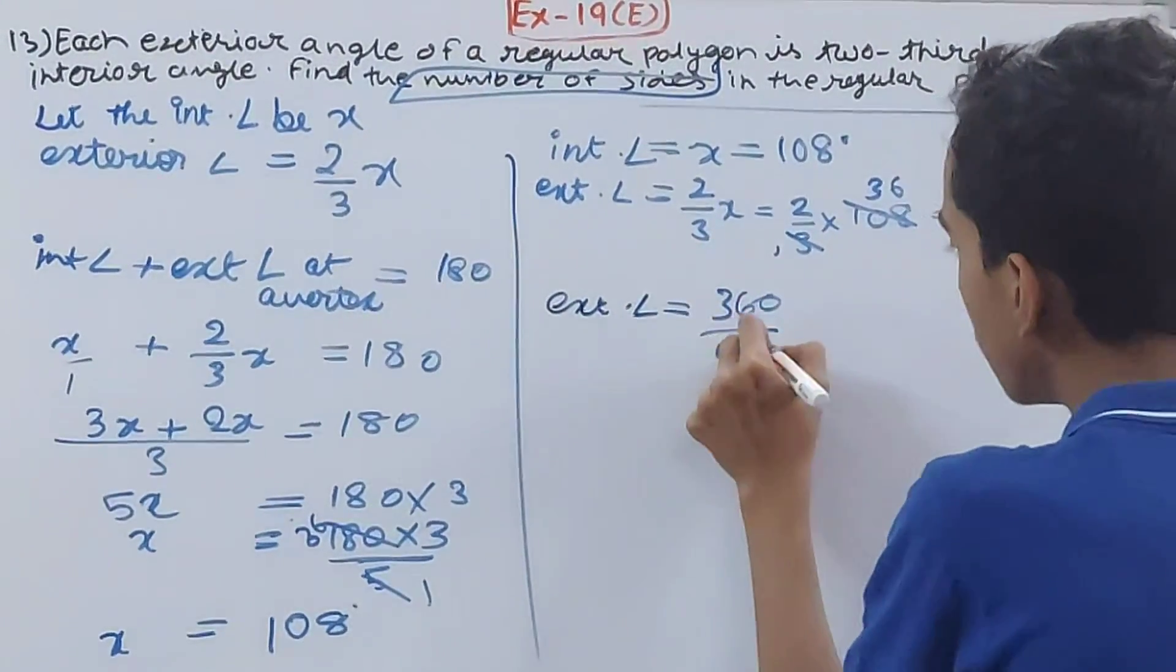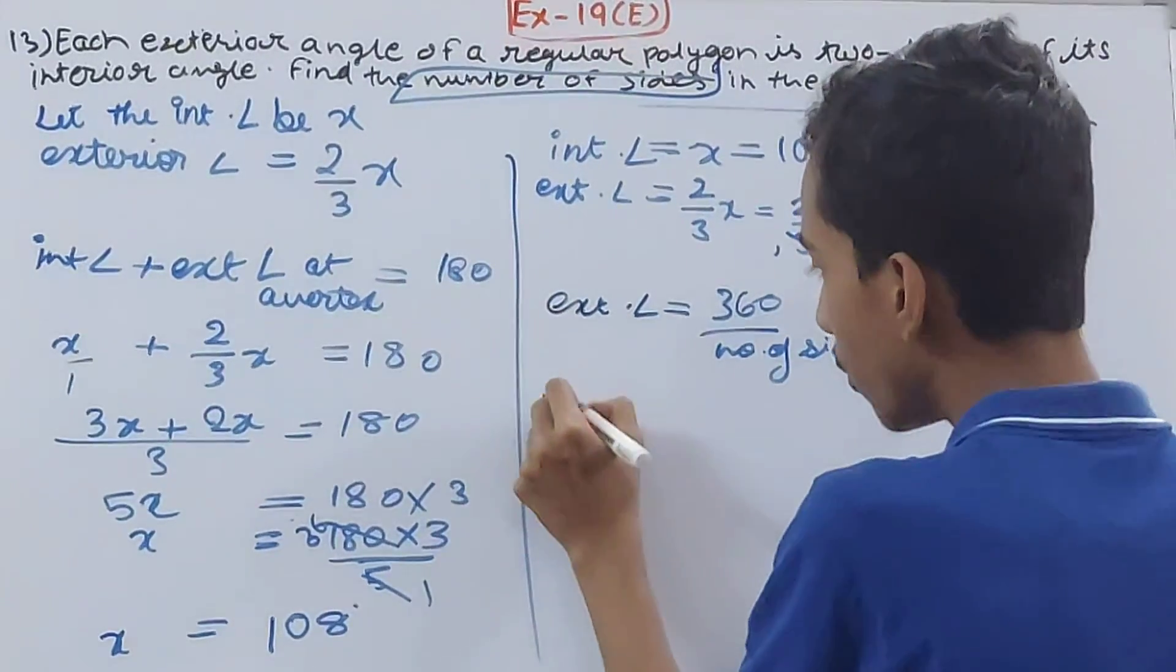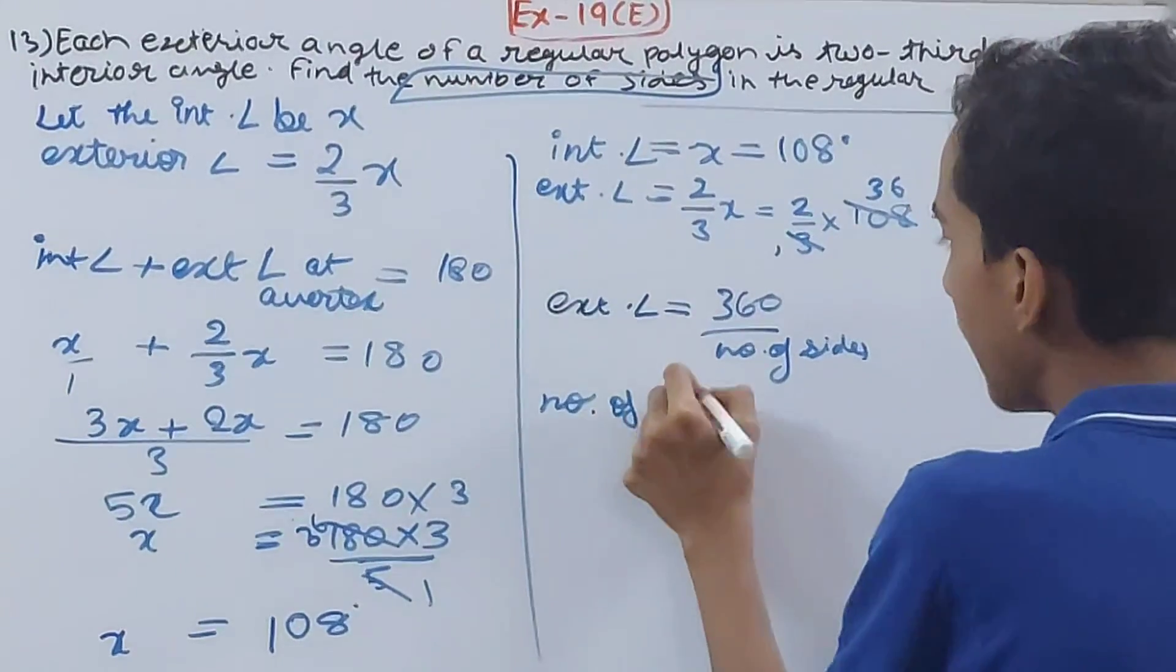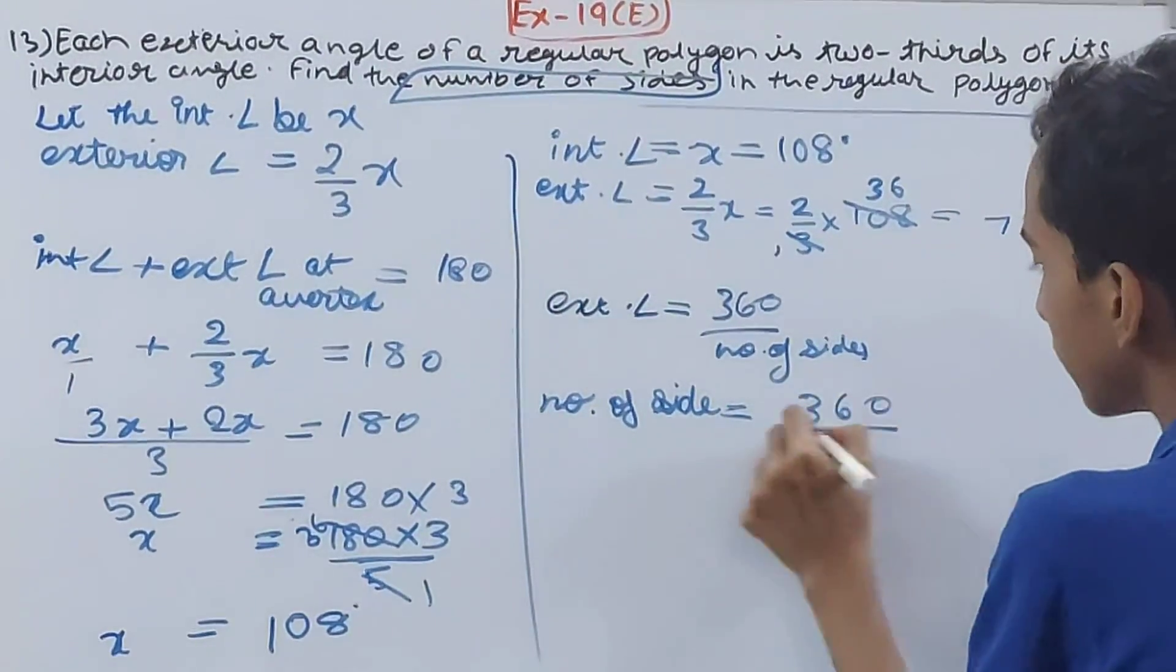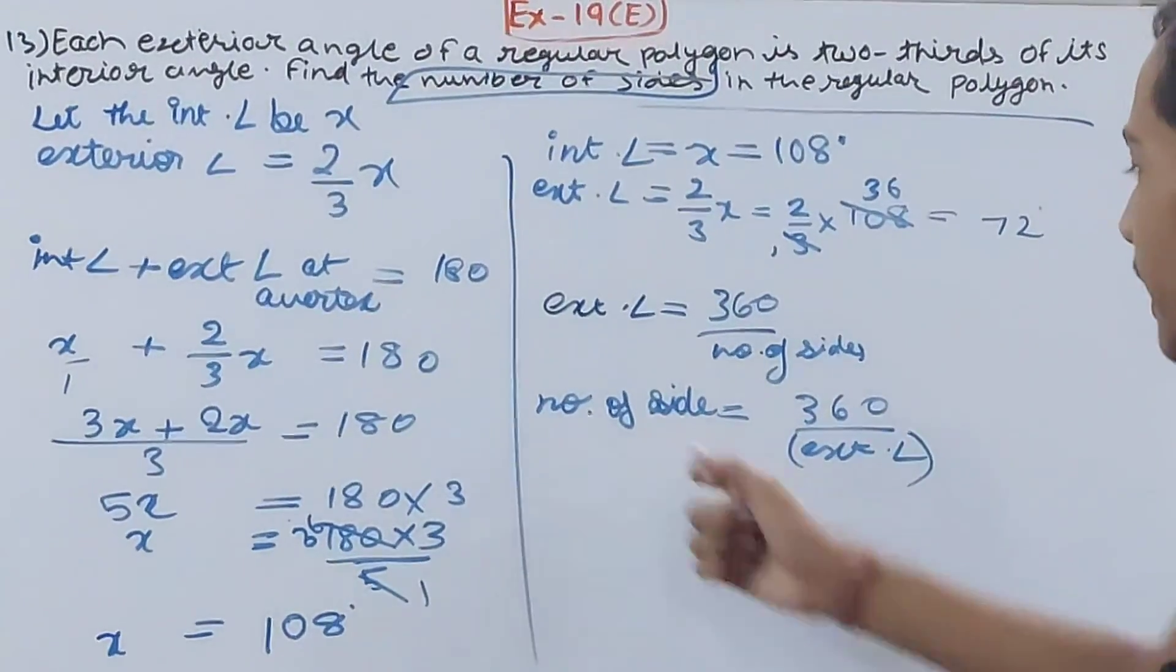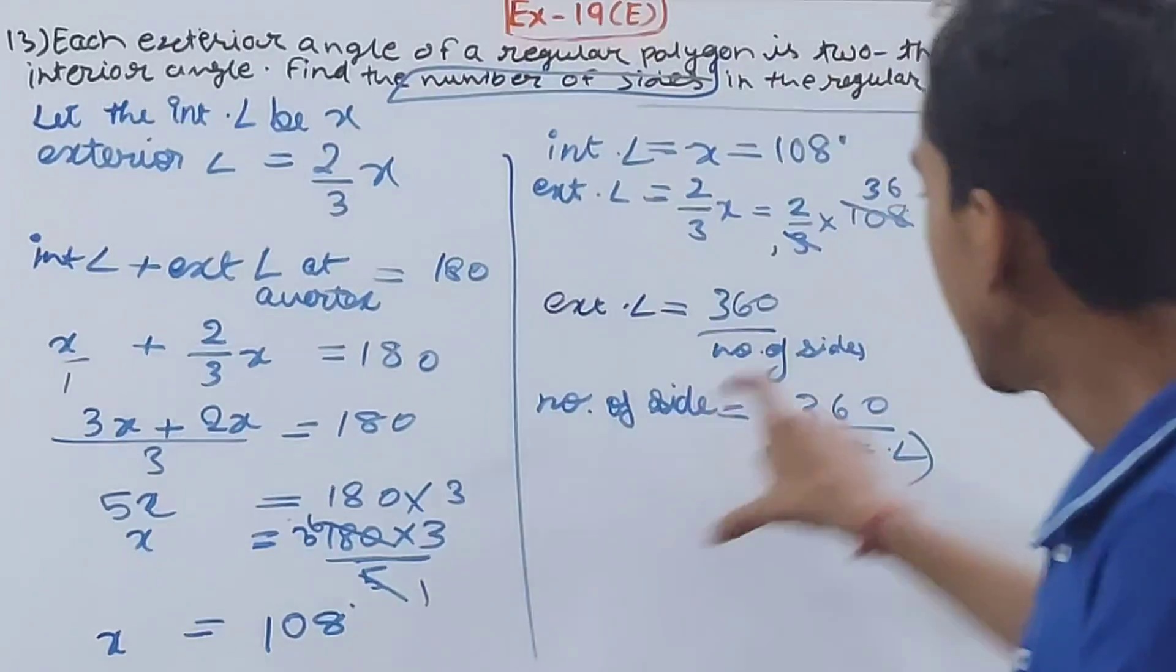Another formula can be formed if I send the number of sides to the left-hand side and bring the exterior angle to the right-hand side. So number of sides is equal to 360 divided by the measure of each exterior angle.